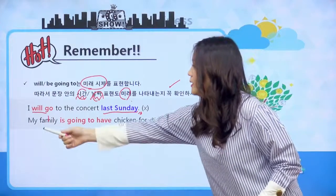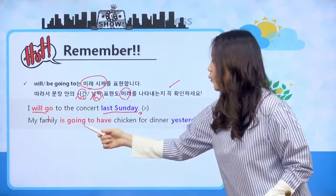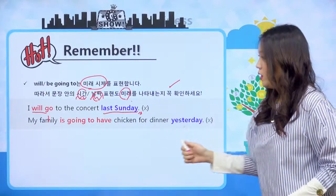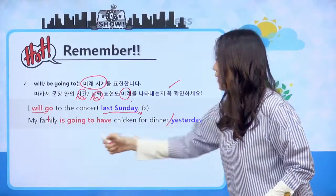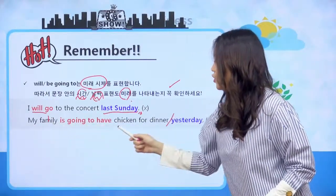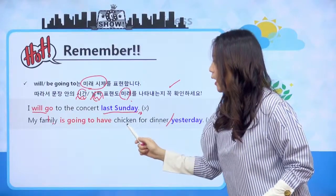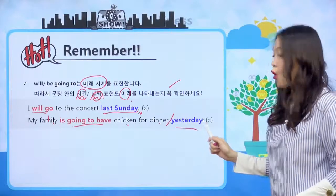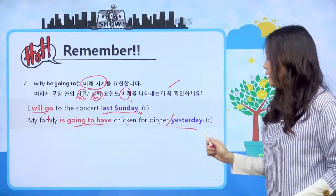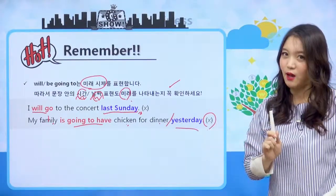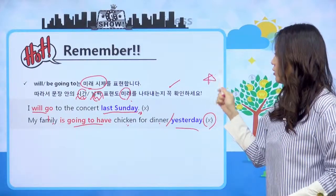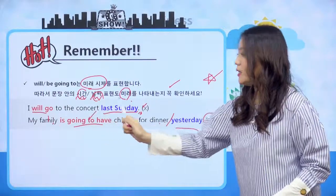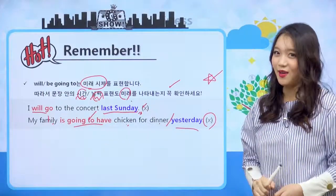또 하나 한번 살펴볼게요. 'My family is going to have chicken for dinner yesterday' 하면, 우리 가족은 치킨을 저녁으로 먹을 거야라는 건데 yesterday는 어제죠? 그래서 이 문장은 틀린 문장이 되는 겁니다. 너무너무 중요하기 때문에 우리 친구들 꼭 문장을 읽을 때는 날짜와 시제가 일치하는지를 확인해보아야 해요.